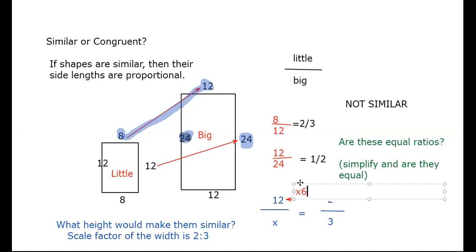So if we need these ratios to be the same, guess what the 3 has to do? It's the same thing. We need to have 3 multiplied by 6 over on our height. If our height was 18, we would have similar figures. So if we no longer have 24, but instead we have 18, then the figures would be similar.